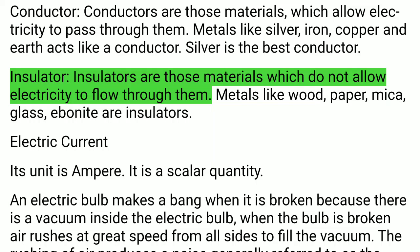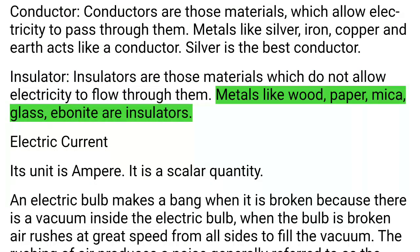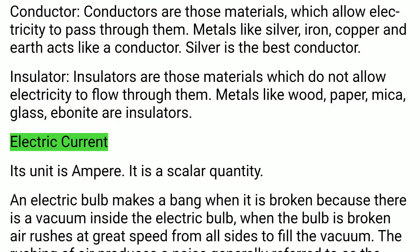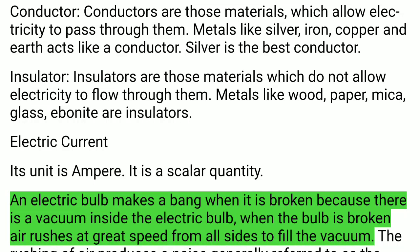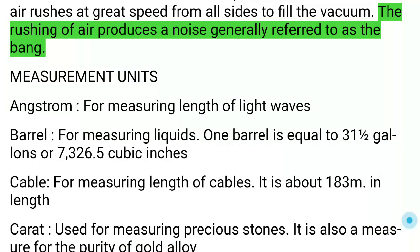Insulators do not allow electricity to flow through them. Wood, paper, mica, glass, and ebonite are insulators. Electric current: its unit is ampere and it is a scalar quantity. An electric bulb makes a bang when broken because there is a vacuum inside; when broken, air rushes in at great speed from all sides to fill the vacuum, producing the noise referred to as the bang.